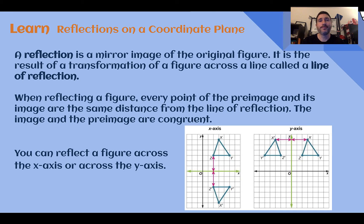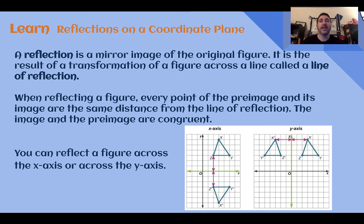Reflections on a coordinate plane. A reflection is a mirror image of the original figure. It's the result of a transformation of a figure across a line called the line of reflection. A reflection is our second type of transformation. In the previous lesson we saw a translation, so this is going to somehow change the shape from the pre-image into an image.